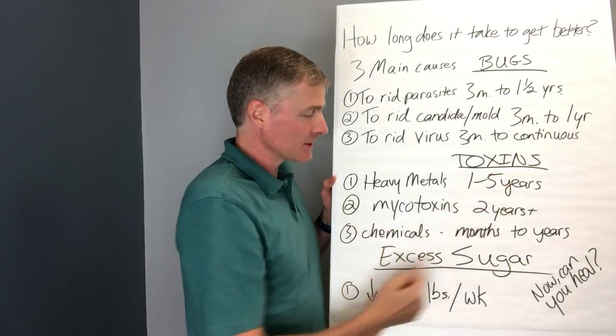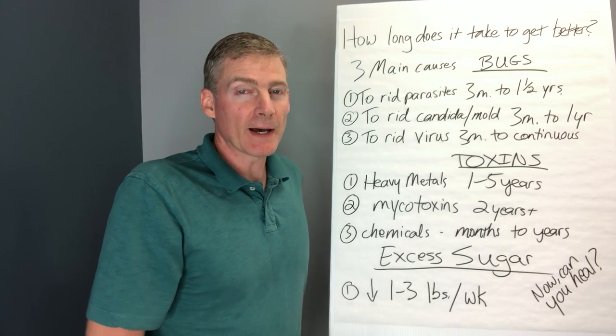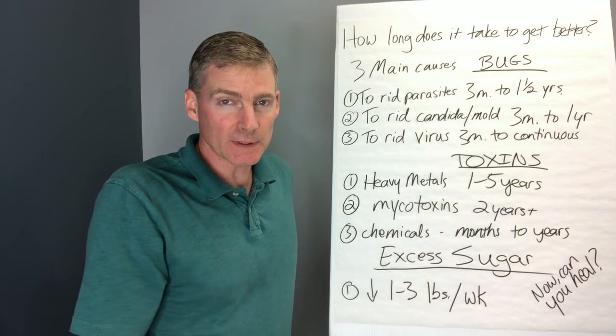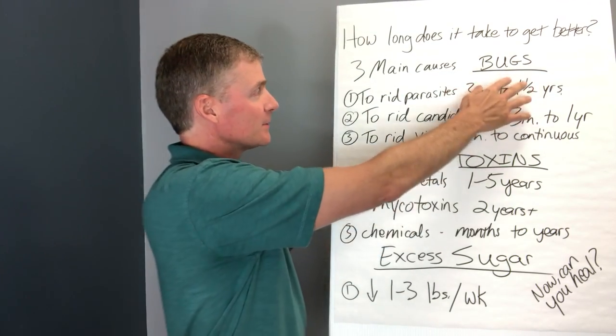Bugs, toxins, and then excess sugar metabolism, which is a standard American diet. High bread, high sugar, high pasta, the excess carbs. So let's just start off with the bugs.